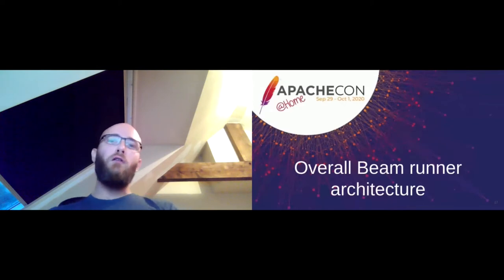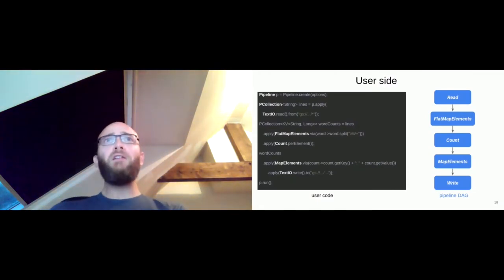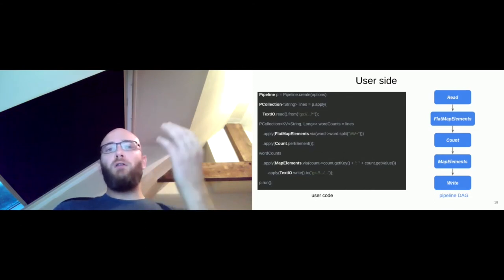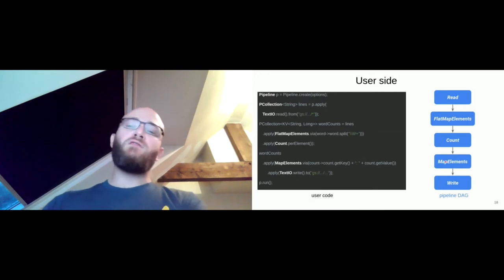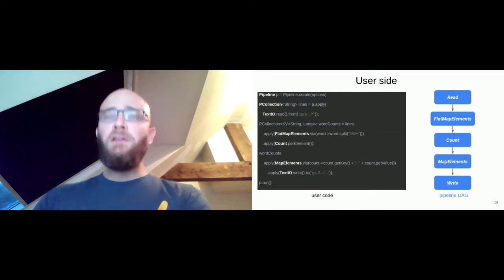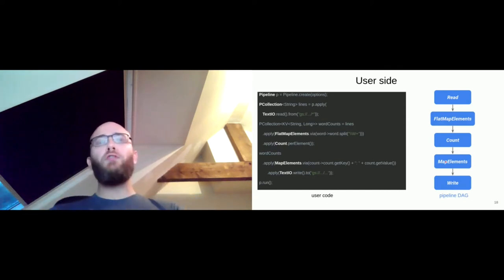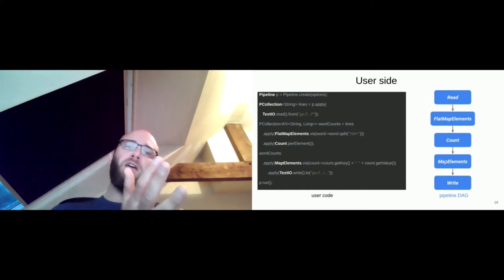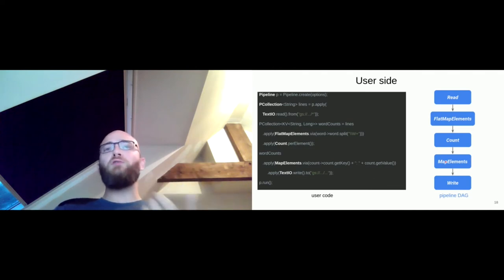The simple word-count pipeline results, after SDK parsing, in a directed acyclic graph (DAG) containing only Beam transforms: read, flat map, count, map elements, and write. The runner's job is to translate this DAG to a native Spark pipeline. The runner visits the DAG and chooses the translation level. Read is translated to a Spark DataSource V2 read, and ParDo to a Spark flat map. For Combine, rather than translating to a Spark GroupByKey and flat map, we translate directly to a Spark aggregator for better performance.